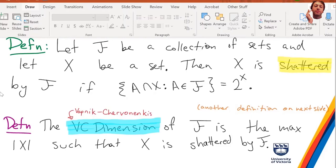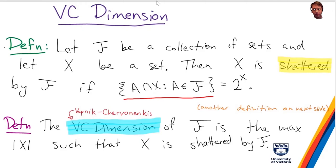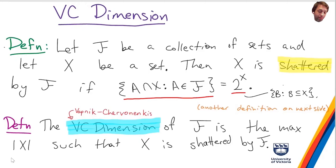Let's talk about VC dimension. Let f be a collection of sets and let x be a set. We say that x is shattered by f if the collection of a intersect x over all a in f gives the power set of x. The power set of x is just all the subsets of x. The VC dimension is the largest cardinality of a set x such that x is shattered by f.